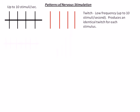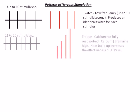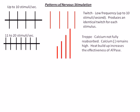When the nerve sends 11 to 20 stimuli per second, the contraction pattern is referred to as trepé. In trepé, each subsequent contraction presents with a stronger contraction.